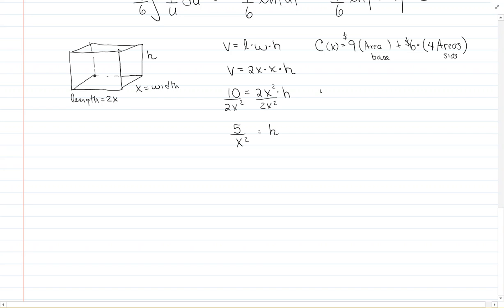The cost is $9, and the area of the base is 2x times x, and then $6 times 4 because you've got four sides with no top to worry about. The area of each side is h times x.